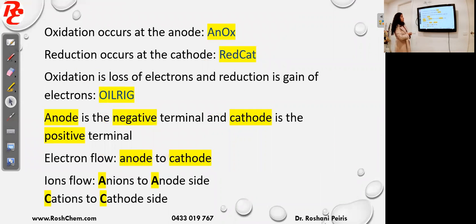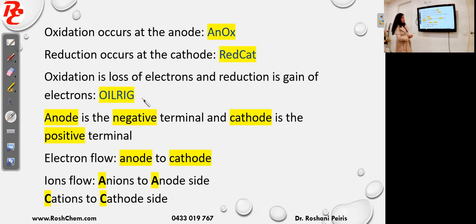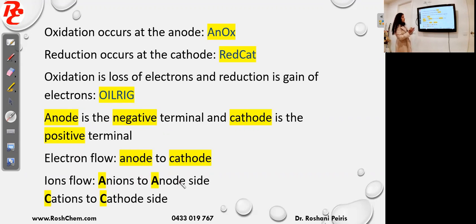Key things to remember about a galvanic cell: oxidation occurs at the anode — remember AN OX; reduction occurs at the cathode — remember RED CAT. Oxidation is the loss of electrons and reduction is the gain of electrons — remember OIL RIG. In a galvanic cell the anode is the negative terminal and the cathode is the positive terminal. Electrons flow from anode to cathode (negative to positive). From the salt bridge, anions flow to the anode side and cations flow to the cathode side.